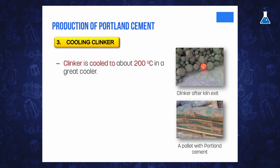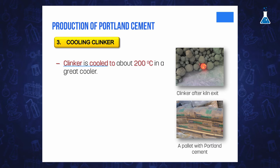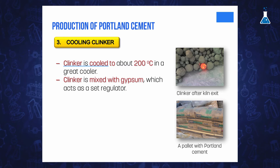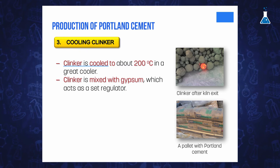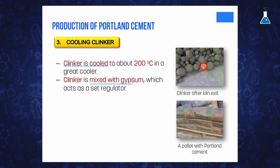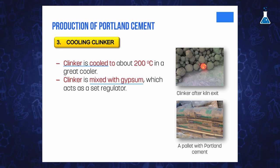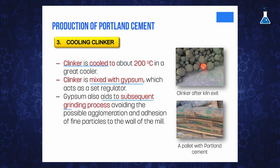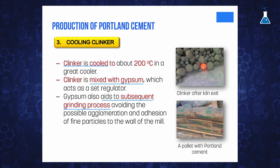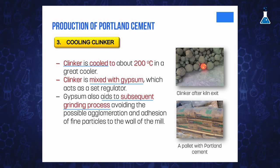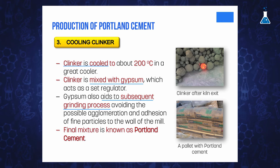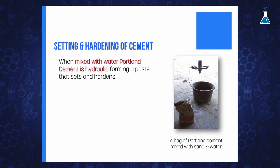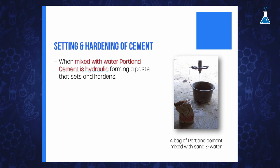After the clinkering process, the cement clinker is cooled to about 200 degrees Celsius in a grid cooler. This is the last step in the production of Portland cement. When clinker is mixed with a small amount of gypsum, or calcium sulfate dihydrate, which acts as a set regulator and aids in the subsequent grinding process by reducing agglomeration and adhesion of fine particles to the mill walls, the final mixture obtained is what is known as Portland cement.